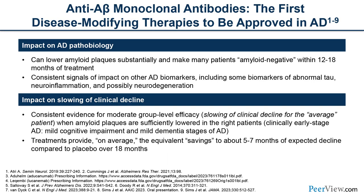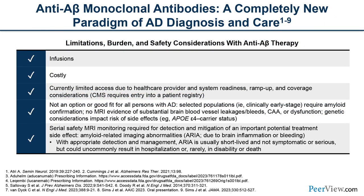These DMTs impact AD pathophysiology by substantially lowering amyloid plaque — making many patients amyloid-negative within 12 to 18 months of therapy — and showing consistent signals on tau, inflammation, and neurodegeneration biomarkers. They have evidence of slowing clinical decline in the right patients: those with MCI due to AD or mild AD. On average, treatments provide the equivalent of five to seven months of saved expected decline compared to placebo.